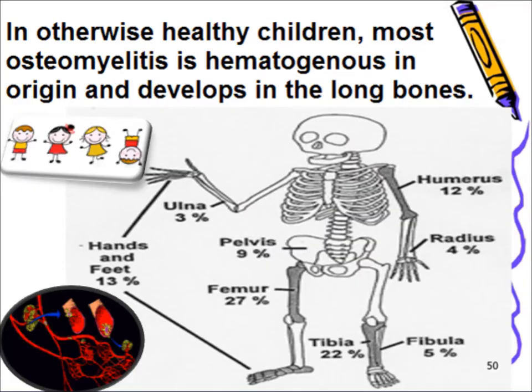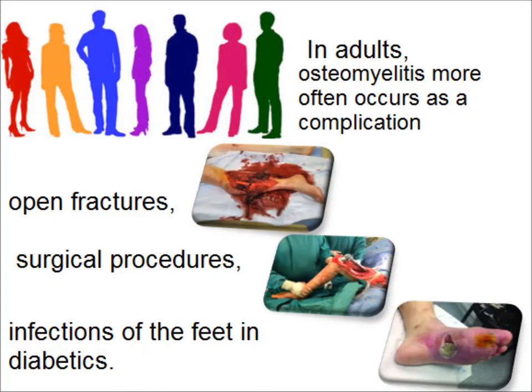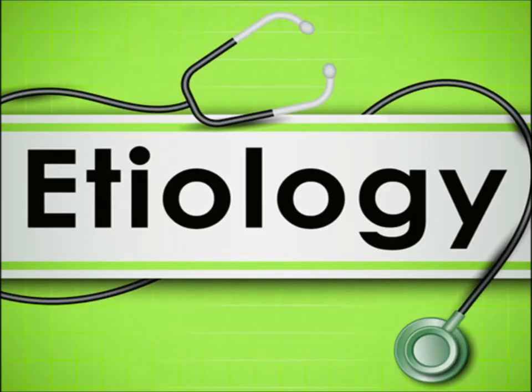In otherwise healthy children, the most common osteomyelitis is hematogenous in origin and develops in long bones. In adults, osteomyelitis more often occurs as a complication of open fractures, surgical procedures, or in diabetic patients.